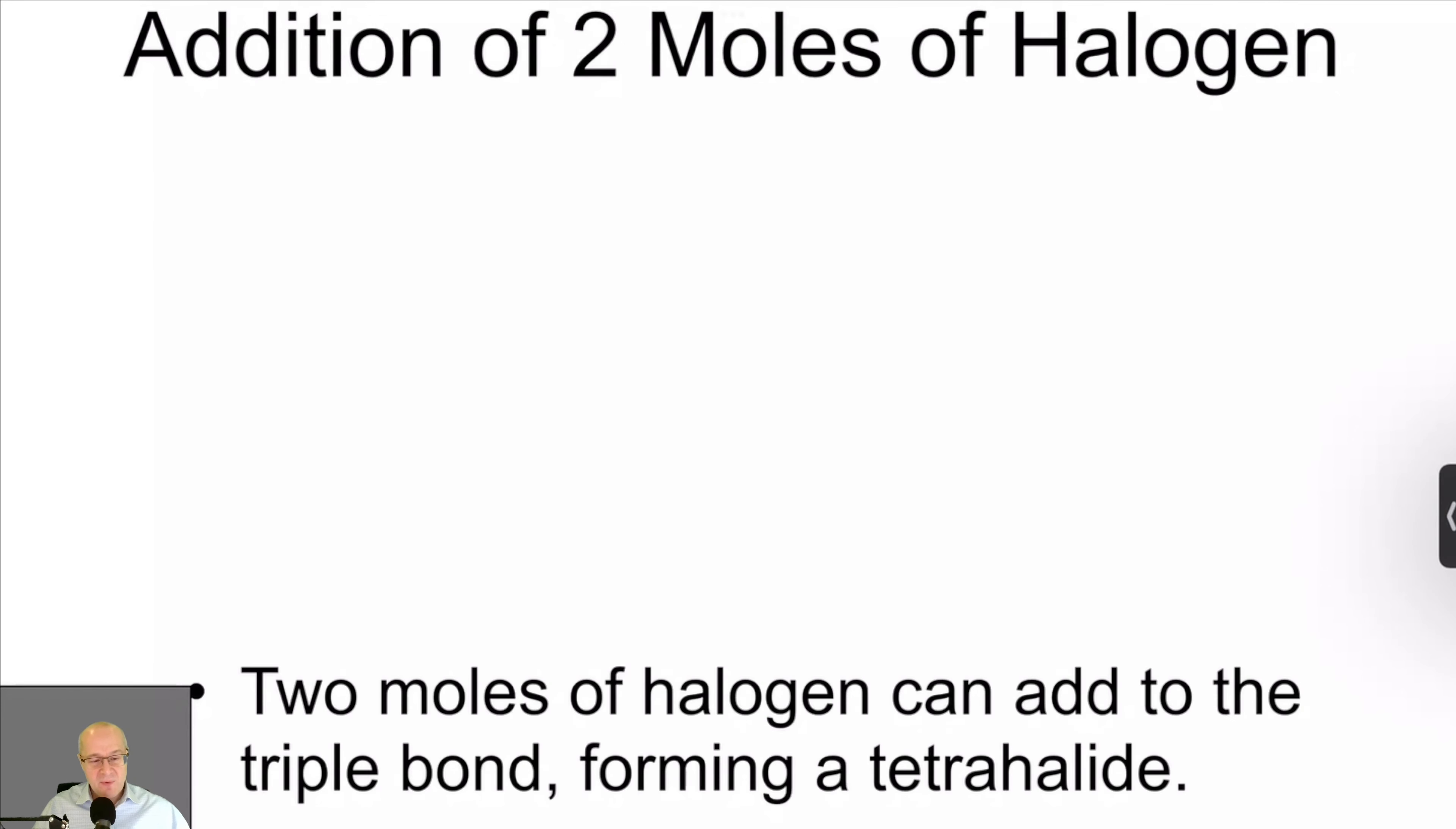So let's take a look at what if we just add two moles right away? What if we just take our alkyne and add two moles right away? Well, if you do that, you'll get the tetrahalide in very good yields, actually.